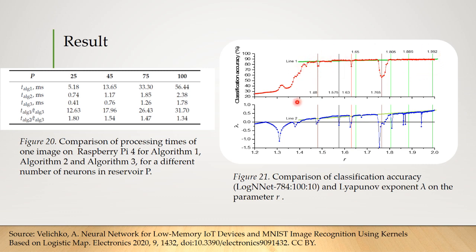Also, a correlation between classification accuracy and the Lyapunov exponent exists. It is not strict. For example, local minima of Lyapunov exponent at R equal to 1.48, 1.63 and 1.765 correspond to local minima of classification accuracy. However, there are a number of minima λ, for example, for R equal to 1.575, for which the classification accuracy remains high. The widest minima λ in the vicinity of R equal to 1.765 also corresponds to the widest minima of the classification accuracy.